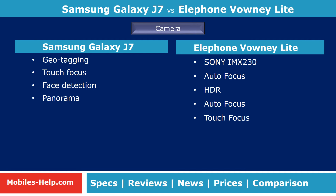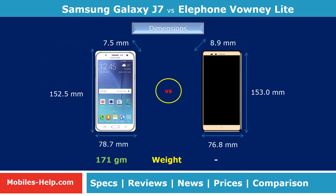Galaxy J7 is slimmer than Bounty Lite; Galaxy J7 measures 7.5 mm thick whereas Bounty Lite measures 8.9 mm thick. Galaxy J7 is also slightly shorter than Bounty Lite. Galaxy J7 weighs 171 grams.